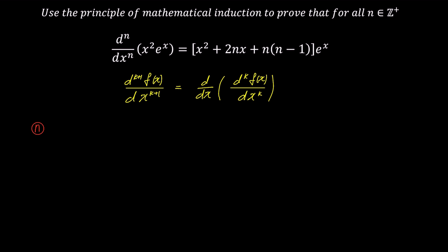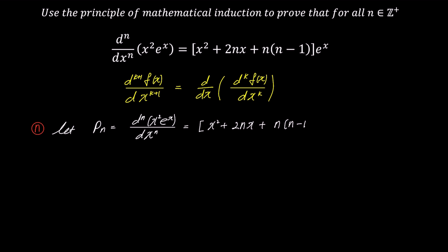Let's start with the first step, n. Let P sub n be the nth derivative of x squared times e to the power of x, expressed as given in the problem: bracket x squared plus 2nx plus n times (n minus 1) bracket times e to the power of x. Going forward, let's refer to the left side as L and the right side as R.